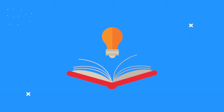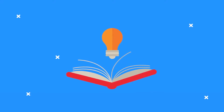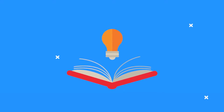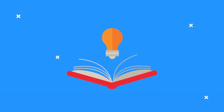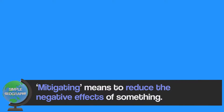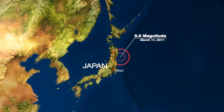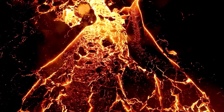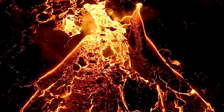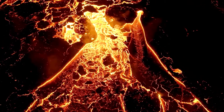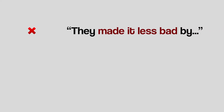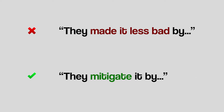Mitigate is also a great word — it's not just a geography keyword either. To mitigate means to reduce the negative effects of something. This is useful because there are many things humans like to try and control but can't stop completely: floods, earthquakes, volcanic eruptions, and lots more. We can't prevent these things from happening entirely, but there are many ways that we can mitigate their impacts. So if you ever find yourself wanting to write a clunky sounding sentence like 'they made it less bad by,' change it to 'they mitigated it by,' and it sounds so much better.